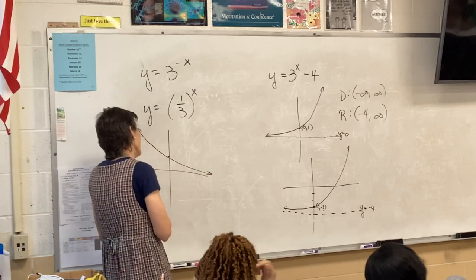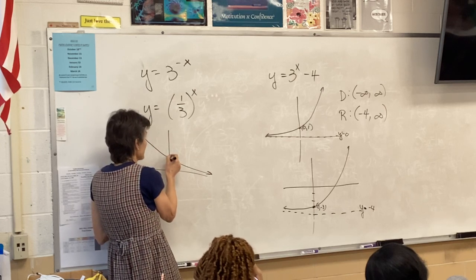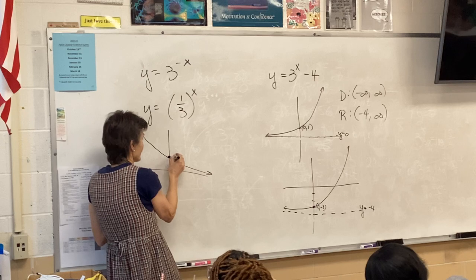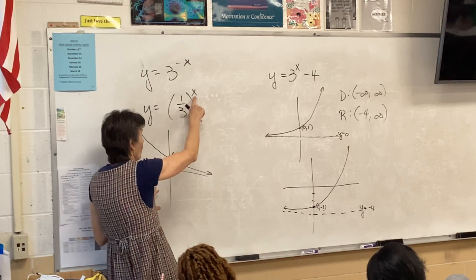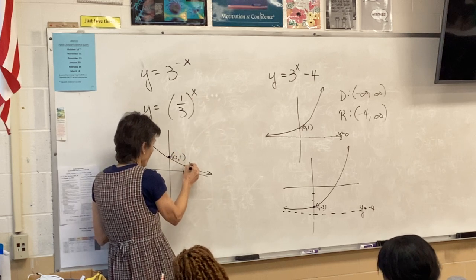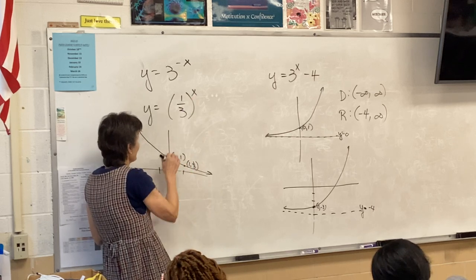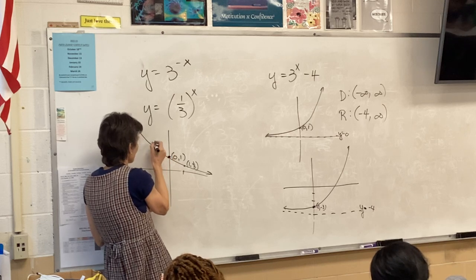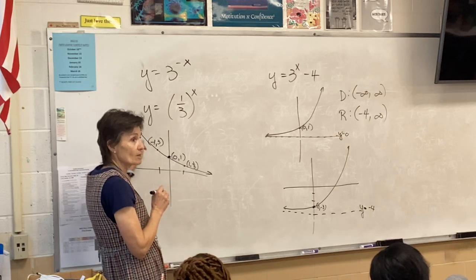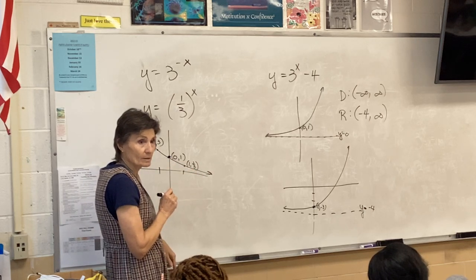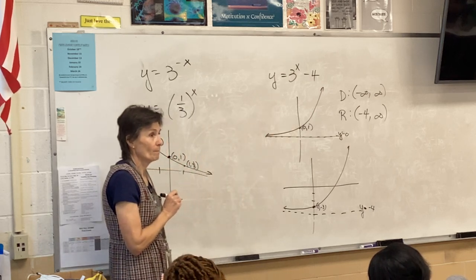So that's question B. Growth or decay? That's going to be a decay. When you raise 3 to the x, you grow. Multiplying by 3 grows. Multiplying by 1 third shrinks, decays. Sketch by plotting some points. Well, I sketch based on my knowledge. What's this point right here? 0, 1. If I let x be 1, this would be the point 1, 1 third. If I let x be negative 1, I get 3. So there's some points plotted.